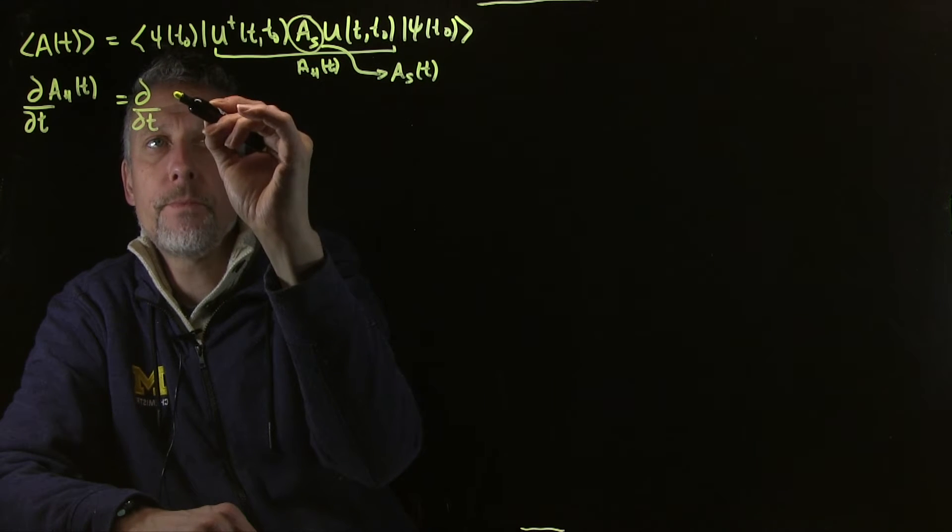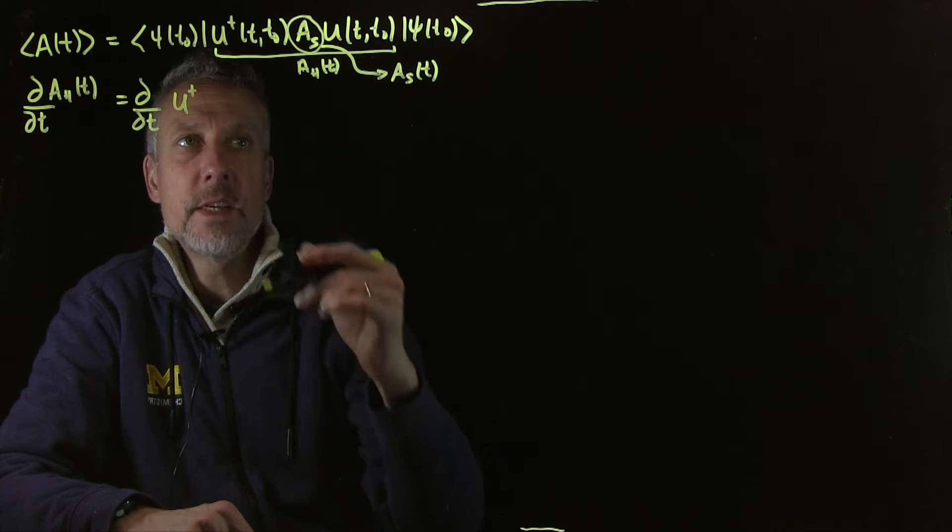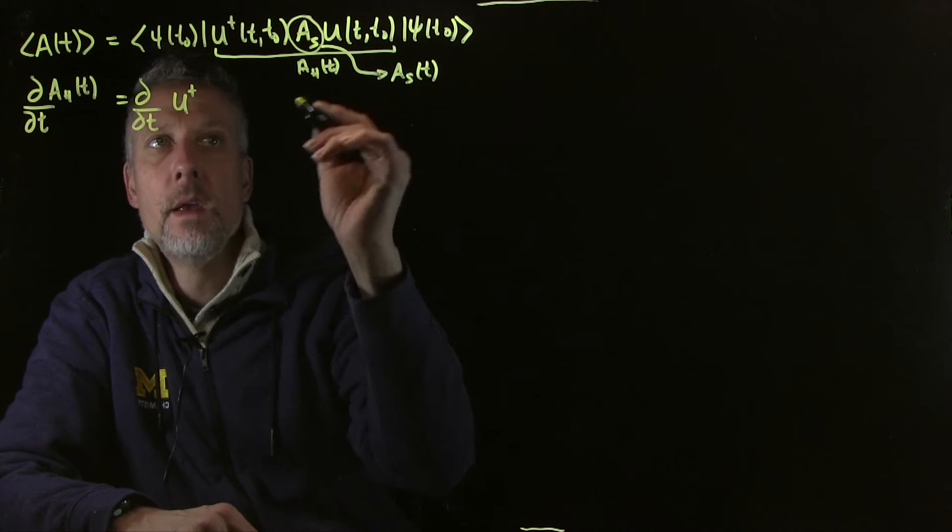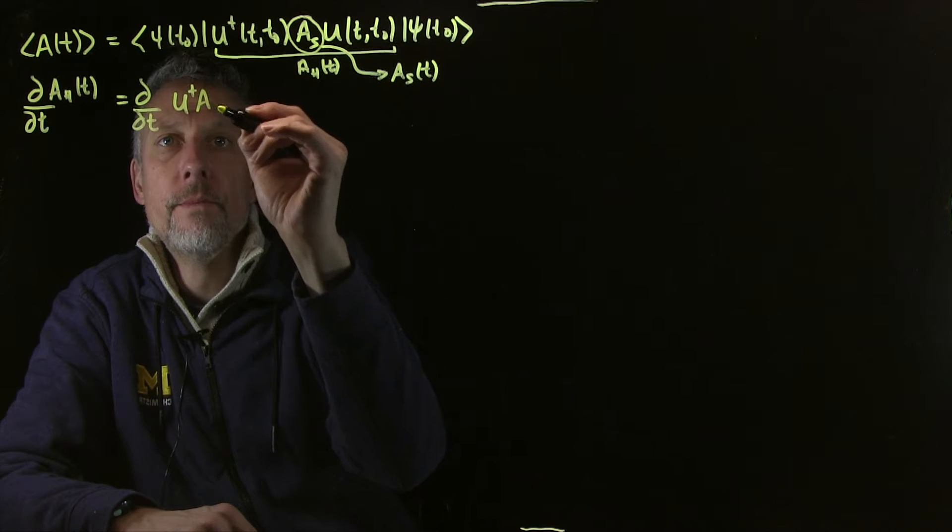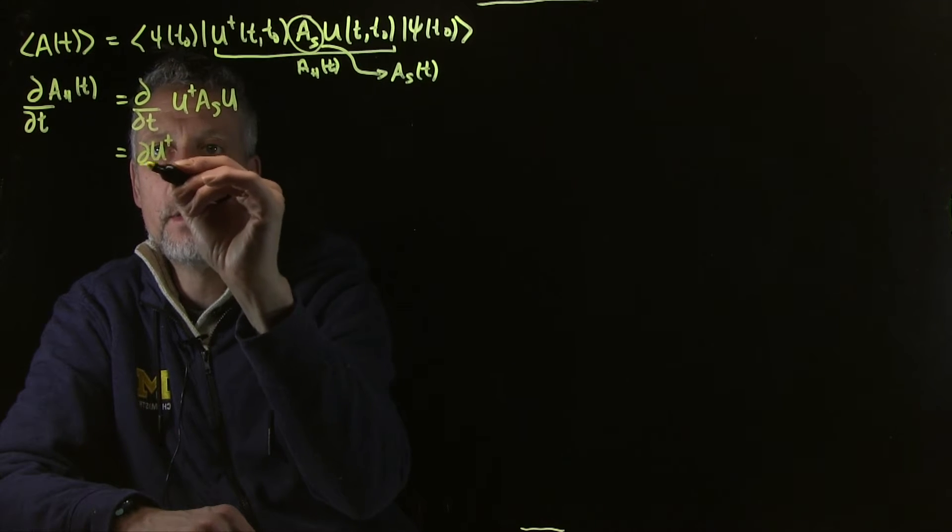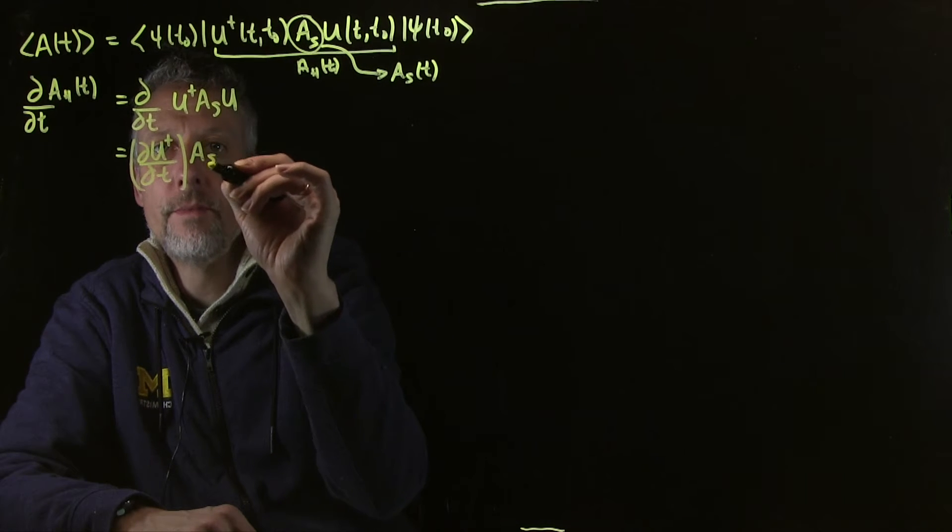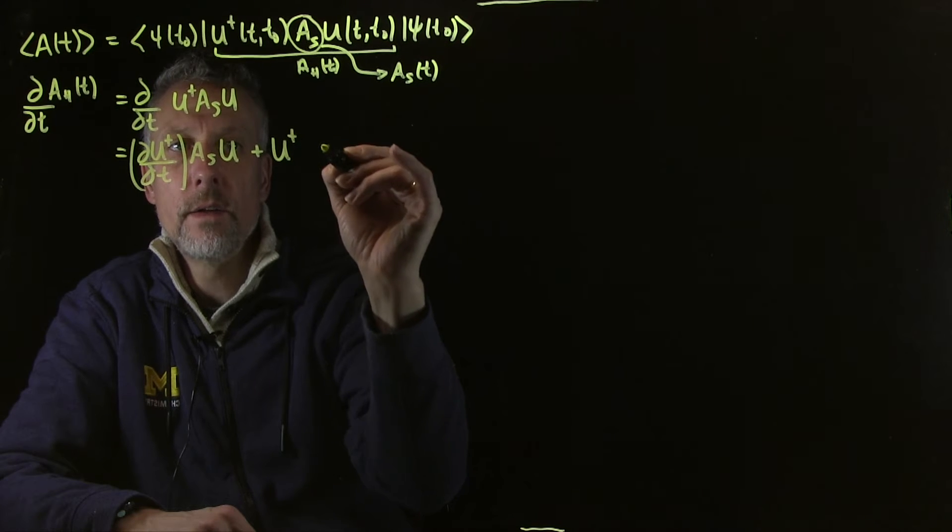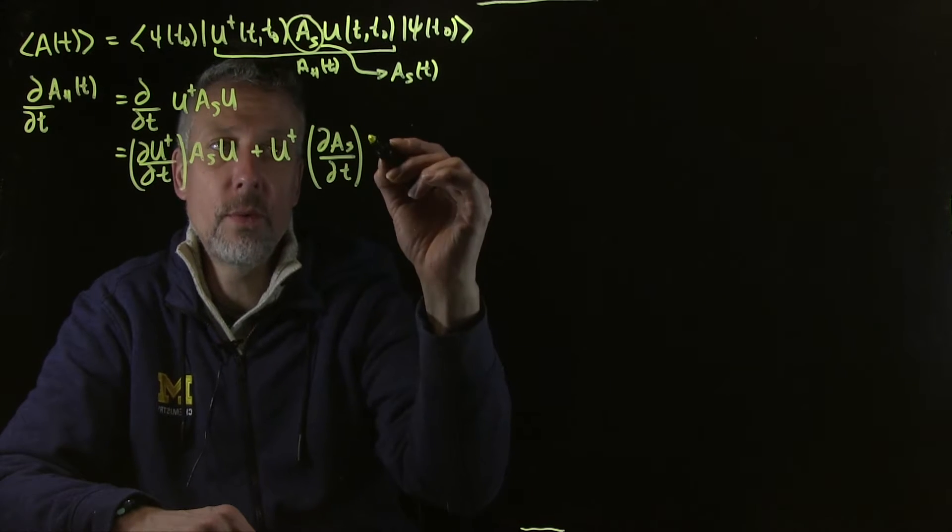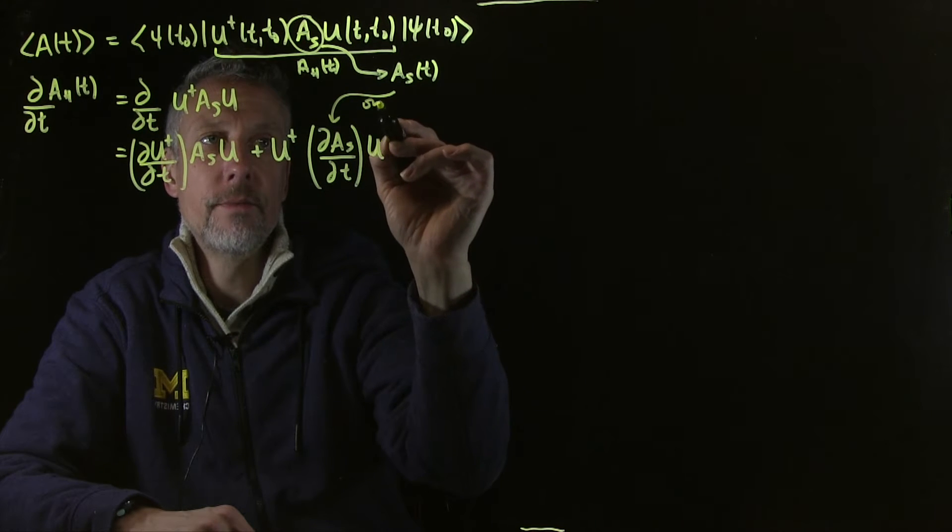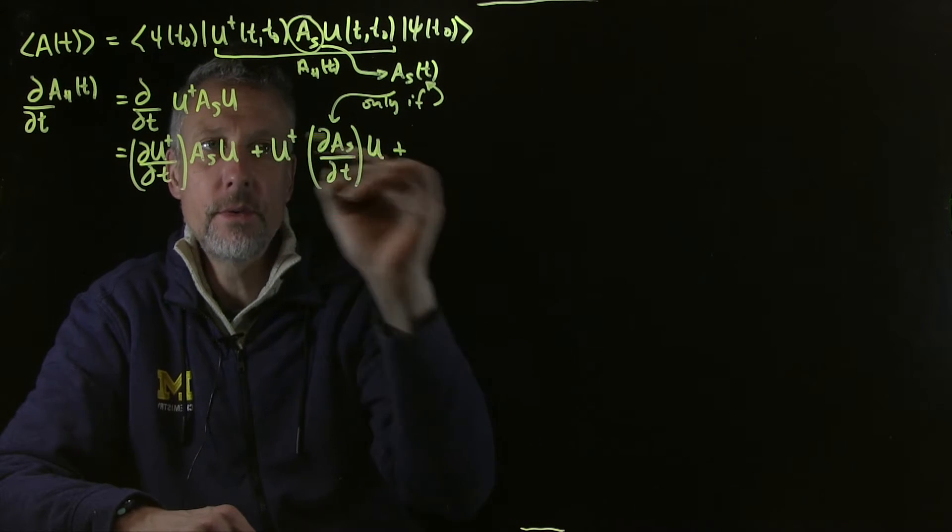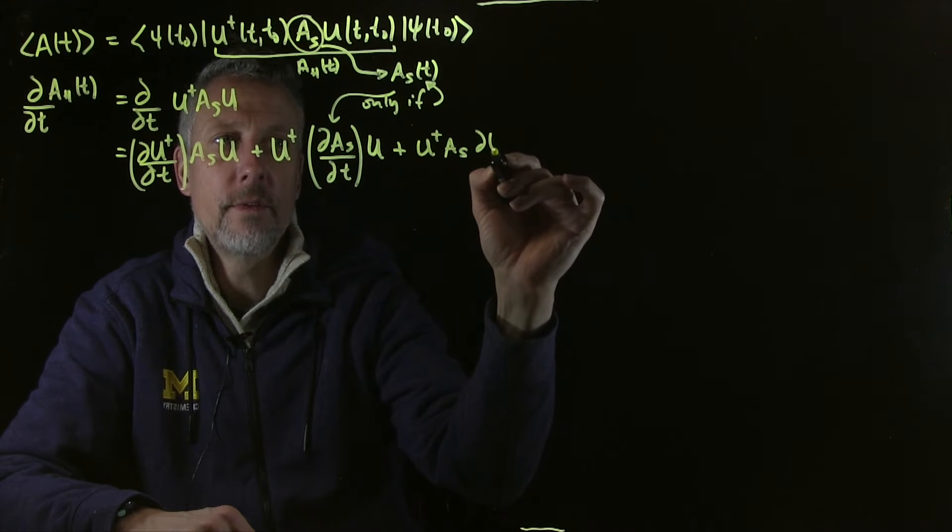So we take the derivative of this thing, u dagger. I'm going to save myself a little bit of writing and just not put the t's and t-naughts in there. It should be pretty straightforward. Whenever you see a u, imagine there's a t and t-naught in there. We will worry about the as itself. So this is going to be this equation, three terms. Use the product rule. The first term will be du dt times the product of the other two, plus u dagger times the derivative of the inner one. And remember, if the Schrodinger picture operator doesn't have time dependence, this term goes away. Then the third term is u dagger as times the time derivative of u.